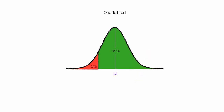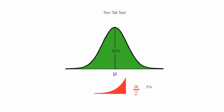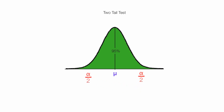When I create a two-tail test at a 95% level of confidence, I will take that red area and put half of it to the right and half of it to the left. In other words, I take alpha divided by 2. So I take the 5% divided by 2 and put 2.5% on the left side and 2.5% on the right side. You'll also see this alpha divided by 2 in other statistics formulas, and this is what it's referring to.